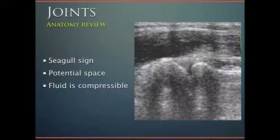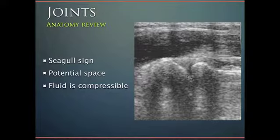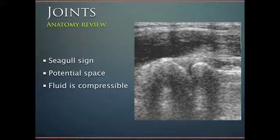When we get to the joints, because one bone comes up to another bone, you can see these bony ends — this is what we call the seagull sign, as it looks like the wings of a seagull at the joint spaces. This area is where one bone comes in contact with another, forming the articular surface. In between the two articular surfaces is the joint space. In this case the patient does not have any fluid in the joint space.